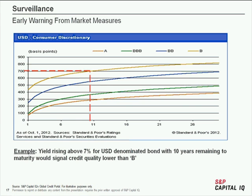Moving from equity-based to bond market-based signals, we look at bond yields plotted against time to maturity by rating category in the consumer discretionary sector. For example, if one has exposure to a single-B rated bond with 10 years remaining to maturity, and the yield goes above the average trend line of 7%, one could infer that the bond market perceives creditworthiness to be deteriorating below the official rating — and perhaps a ratings action might be forthcoming. So we've looked at CDS-based, equity-based, and bond market-based signals to complement the official rating.